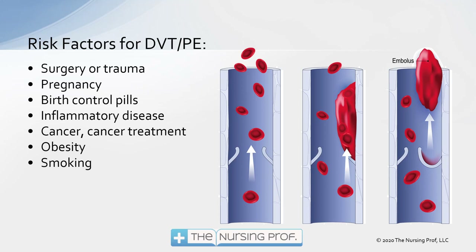Other risk factors include surgery or trauma. These cause an inflammatory response in the body, and after surgery or with trauma, we expect clotting to form. However, the clotting can be a little out of control, causing clots in areas where we don't need them, and then we can have blood clots and emboli occur.